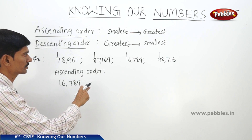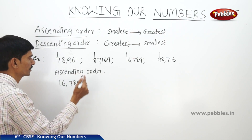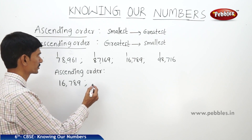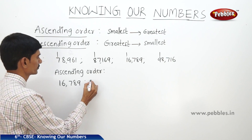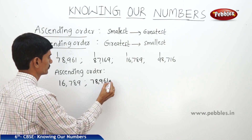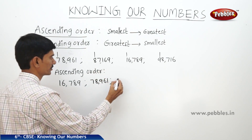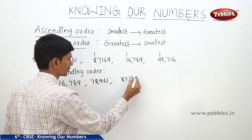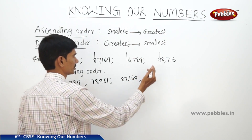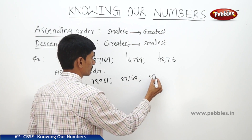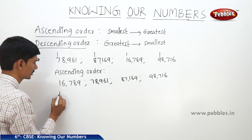The next smallest number is 78,961. After that comes 87,169. And the next one is 98,716. Now if you arrange all these numbers in descending order.